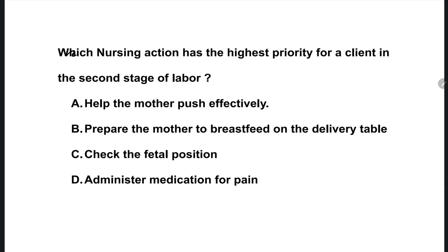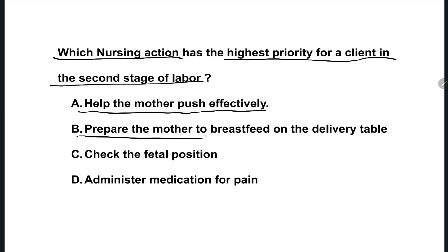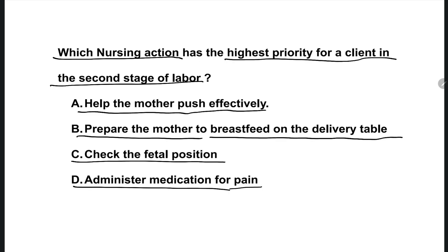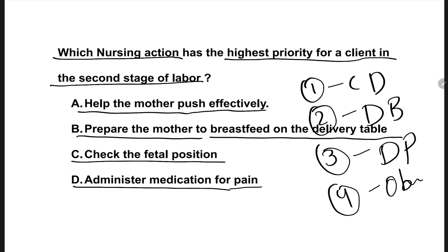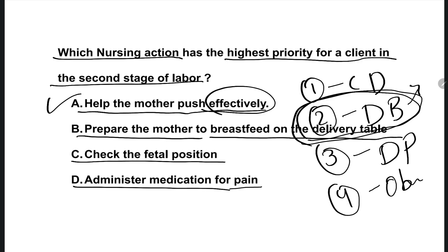The next question: which nursing action has the highest priority for a client in the second stage of labor? Options are: help the mother to push effectively, prepare the mother to breastfeed on the delivery table, check the fetal position, administer medications for pain. The first stage is cervical dilatation, second stage is delivery of the baby, third stage is delivery of the placenta, fourth stage is the observation period. In the second stage, the baby has not yet been delivered, so the right one is option A — help the mother to push effectively.